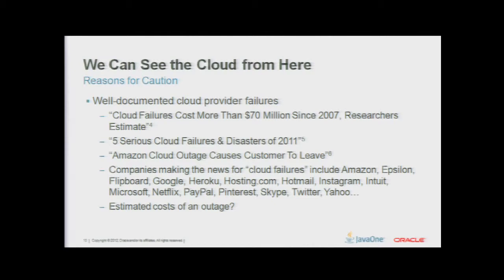Anybody have a guess on the estimated costs of an outage? The numbers you can find are somewhere between $200,000 and $225,000 per hour in costs. About four or five months ago there was an Amazon Web Services outage that cascaded across multiple zones. A few companies were out over 24 hours — that's about five million right out of the pocket. Just something to think about.